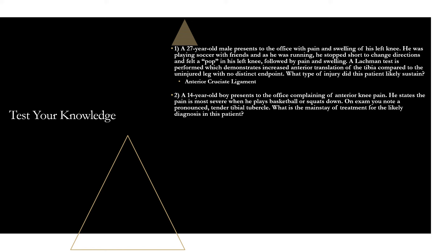Question 2: A 14-year-old boy has anterior knee pain most severe when playing basketball or squatting, with a pronounced tender tibial tubercle on exam. This is Osgood-Schlatter disease — fits demographics (male, peak age 13–14), pain exacerbated by squatting and sports, and the pronounced tibial tubercle on exam. Mainstay of treatment is conservative: NSAIDs, ice, rest. Remember 'Osgood Squatter Denise' — squatting exacerbates it, and 'Denise' reminds you it involves the knees.